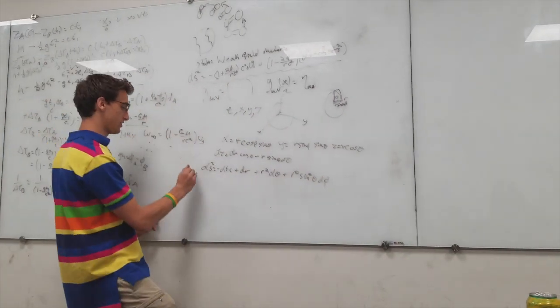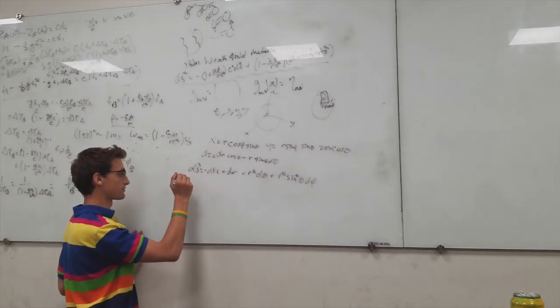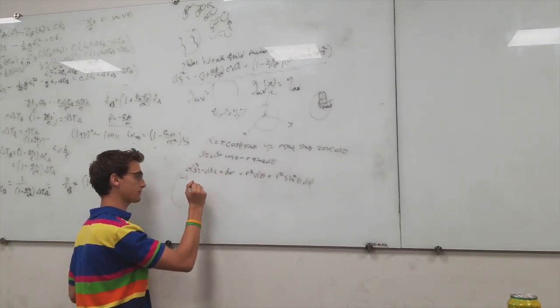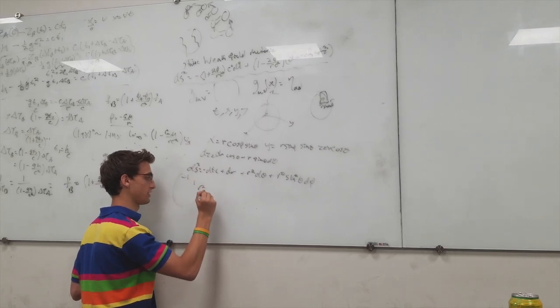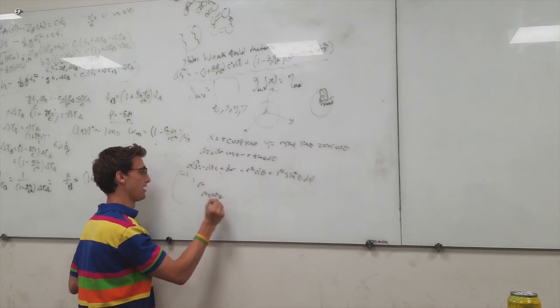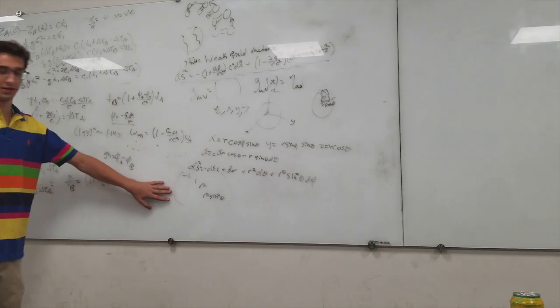So now our flat metric, we could rewrite it as this: negative one, one, R squared, R squared sine theta. This is how we write our spherically symmetric flat metric.